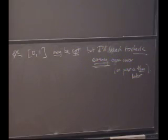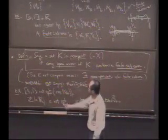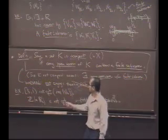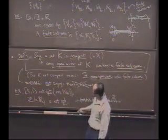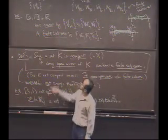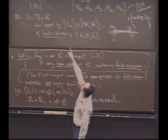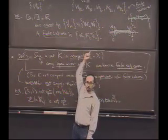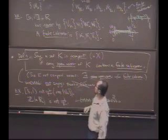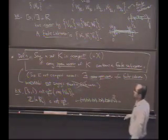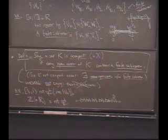Notice: with (1/2, 1), it's not compact because there is an open cover with no finite subcover. But that doesn't mean there couldn't be some open covers with a finite subcover. To show something's not compact, it's generally a lot easier — you just have to exhibit one open cover with no finite subcover.